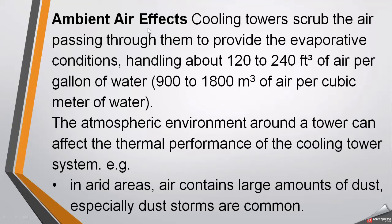Ambient air has an effect because when a cooling tower scrubs the air passing through it to provide evaporative conditions, this air handles about 120 to 240 cubic feet of air per gallon of water, or 900 to 1800 cubic meters of air per cubic meter of water, to create the evaporative effect that cools the hot water. The atmospheric environment around the tower plays an important role and can affect the thermal performance of the cooling tower.